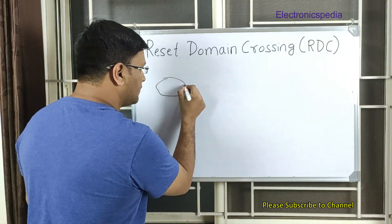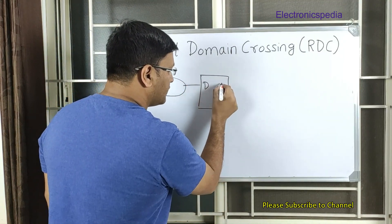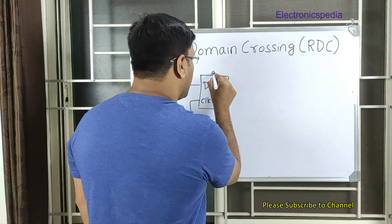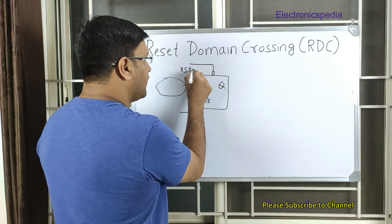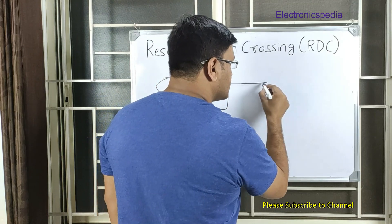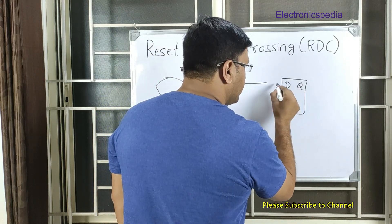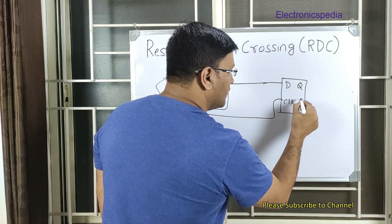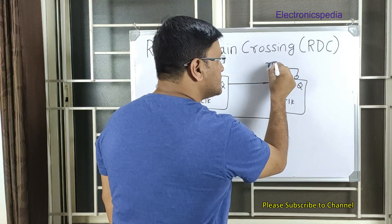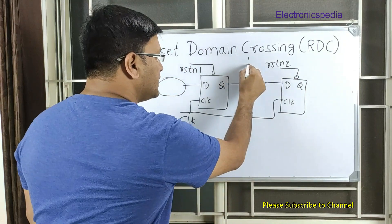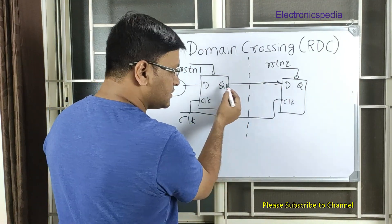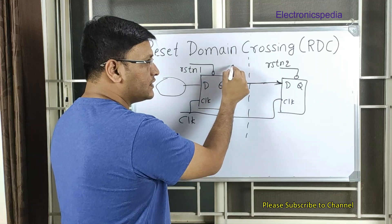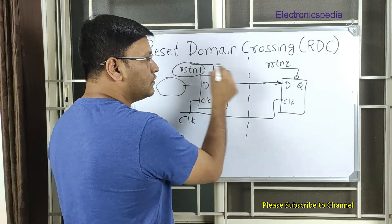Assume we have a D flip-flop with output Q and a clock. It has reset_n1. The signal from this flop goes to a second flop which has the same clock but a different reset, reset_n2. The signal launched by the first flop is captured by the second flop, so it is crossing the boundary from reset domain 1 to reset domain 2.